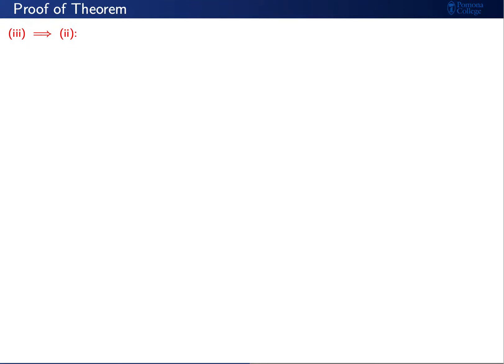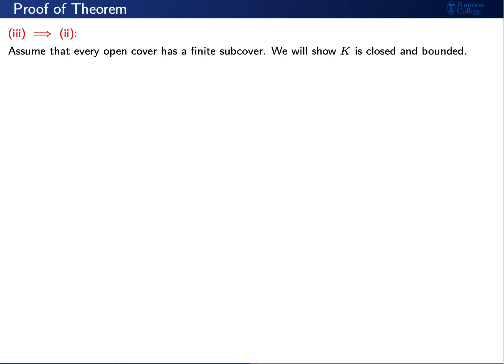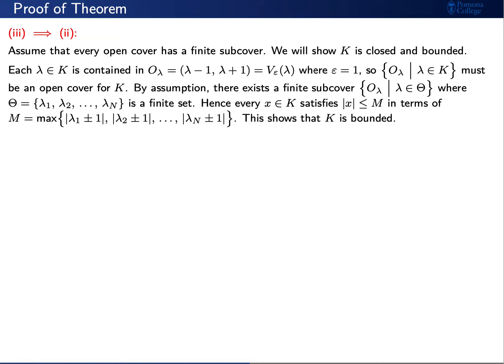Finally, let's prove that statement three implies statement two. Assume that every open cover of K has a finite subcover, and we'll prove that K is both closed and bounded. First, let's prove K is bounded. Every lambda in K is contained in the open interval from lambda minus 1 to lambda plus 1. So the collection of these O sub lambdas, where lambda ranges over K, is an open cover for K. By our assumption, there exists a finite subcover, where capital Theta consists of the finite set lambda 1, lambda 2, through lambda sub n. Since we have a finite set of intervals, we can see that their union is bounded, and we can explicitly write the bound M in terms of these lambdas.